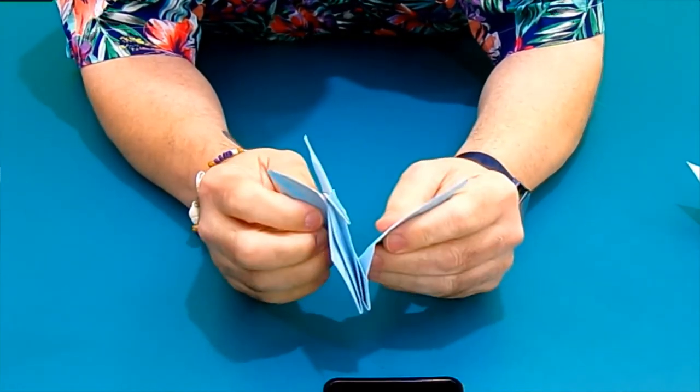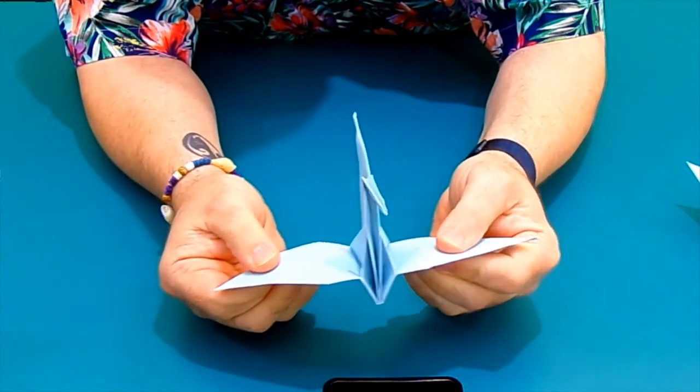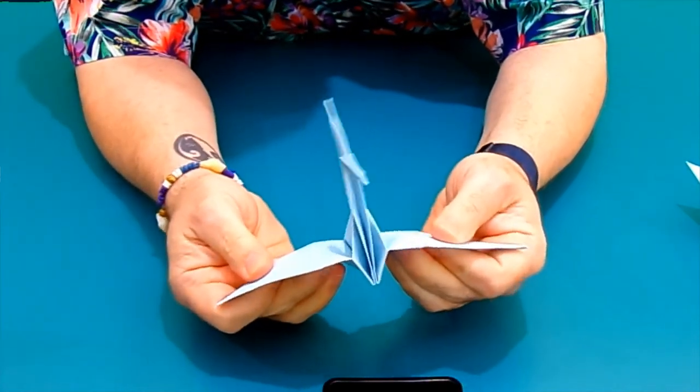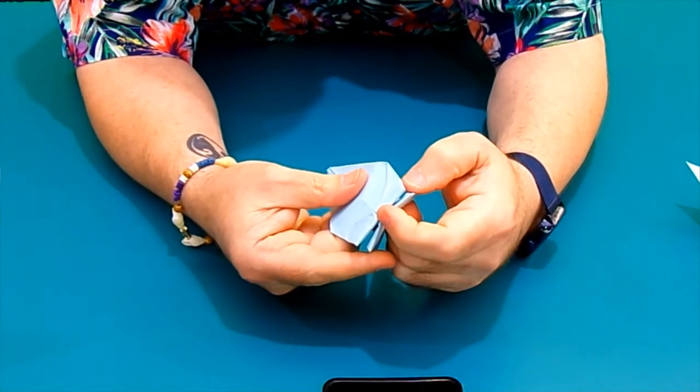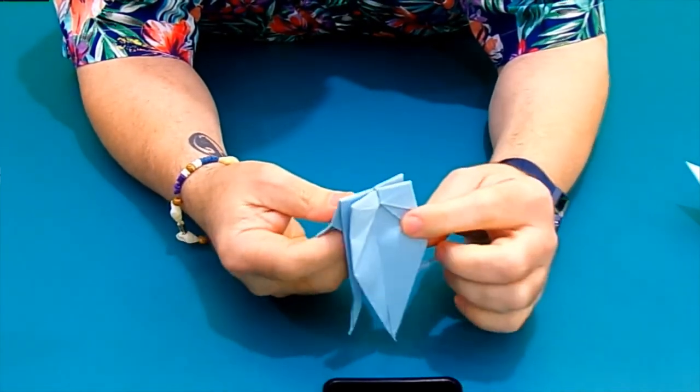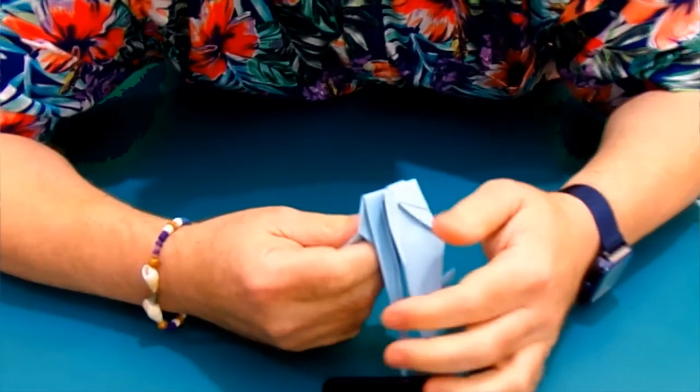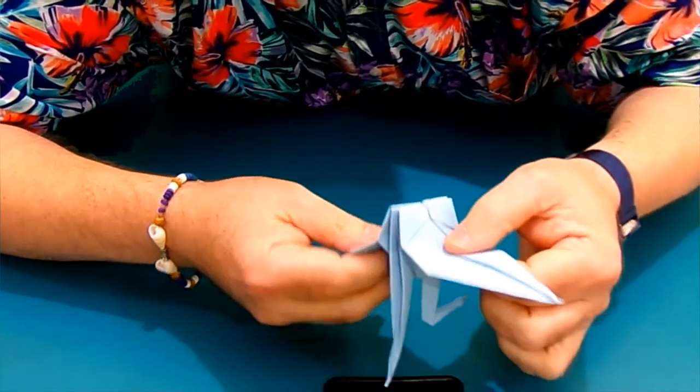We then pull out our wings. And we might pull a little bit. And then there's a little tiny hole right here. We are now going to blow and pull gently.